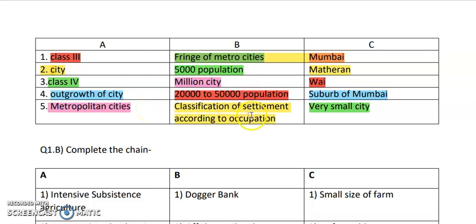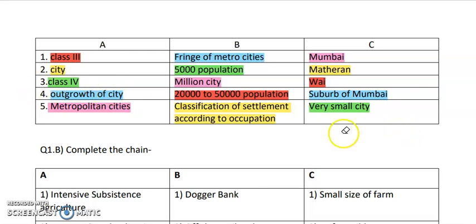There is a bit of confusion in this question because the options are not very clear — for example, 'very small city' and 'million city.' Matheran has a population of near about 5,000, so Matheran can also match class 4. If you have any suggestions for this question's answer, you can comment in the comment section. I always welcome corrections.